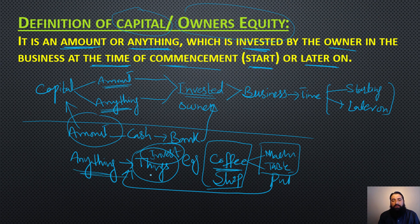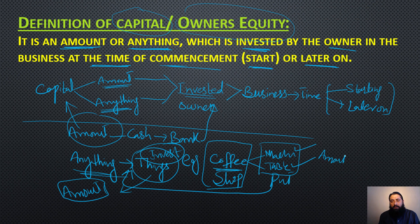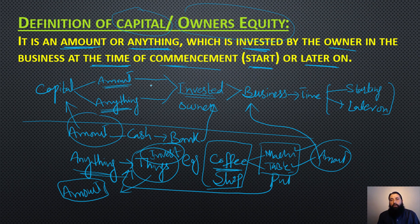The amount of these three things — the amount of the coffee machine, amount of the table, amount of the chairs — all of this that I invested in my business, these things are also termed as capital for me because I am the owner. So capital is basically an amount or anything invested by the owner into the business at the start, which means commencement investment, or later on — and this is termed as capital or owner's equity.